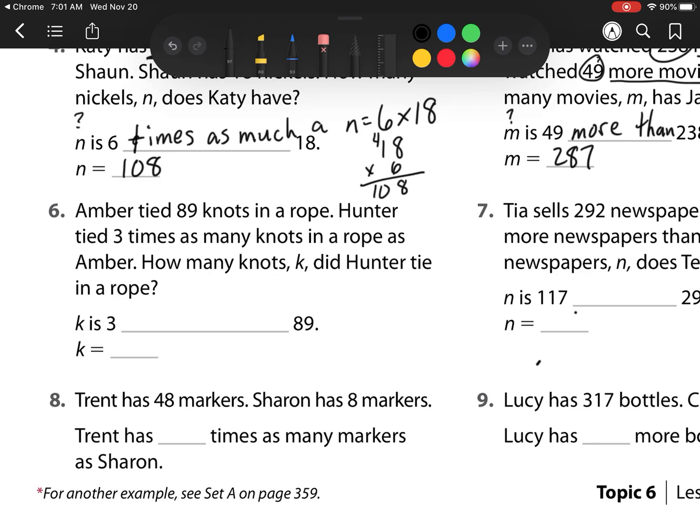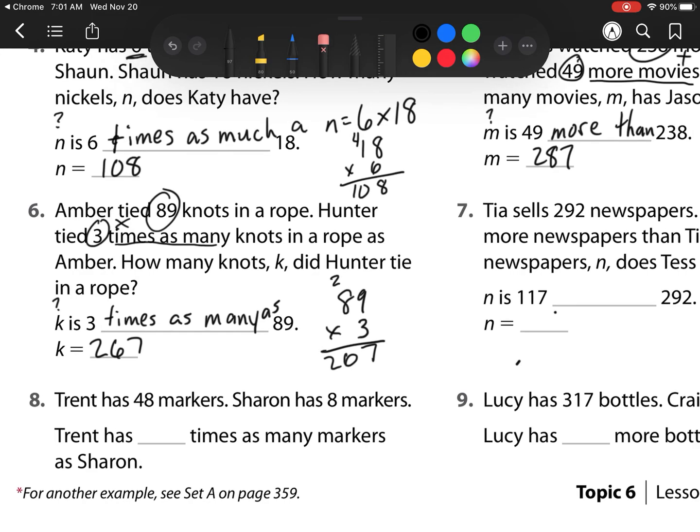On to number 6. Amber has tied 89 knots in a rope. Hunter has tied 3 times as many knots in a rope as Amber. How many knots K did Hunter tie? Well, we have 3 times as many. So K, this mystery number, is 3 times as many as or as much as 89. So I have 89 times 3. So when I multiply, 3 times 9 is 27, regroup, 3 times 8 is 24 plus 2 is 26. So she has tied 267 knots.